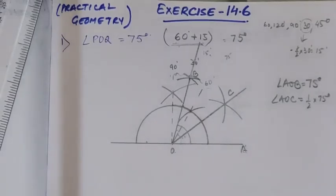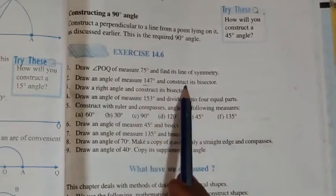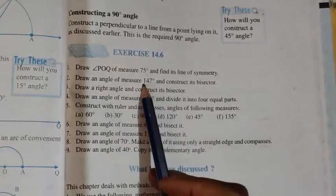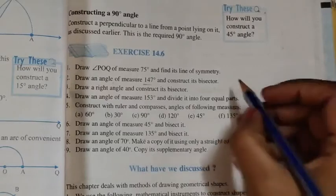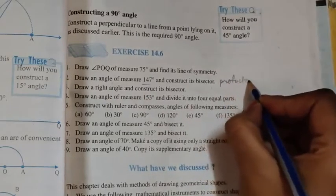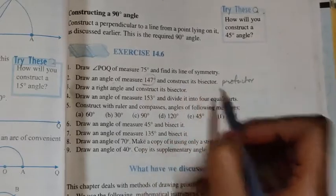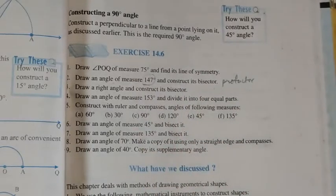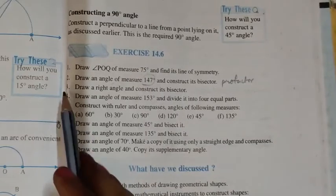Question number two says: draw an angle of 147 degrees and construct its bisector. Since 147 degrees cannot be constructed with a compass, we will use a protractor to first draw 147 degrees, then construct its bisector in the same way we did for 75 degrees in question one.